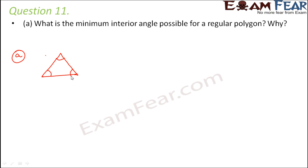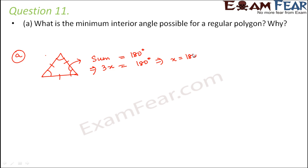So what is the minimum value of each angle in order to form a regular polygon? In a regular polygon, all sides are equal and all angles are equal. So the sum of the three angles is equal to 180 degrees. Let each angle be x, so 3x equals 180 degrees, therefore x equals 60 degrees. So 60 degrees is the minimum interior angle possible for a regular polygon. The term 'regular' is very important here, because of that we could apply the logic of 3x equal to 180 degrees.